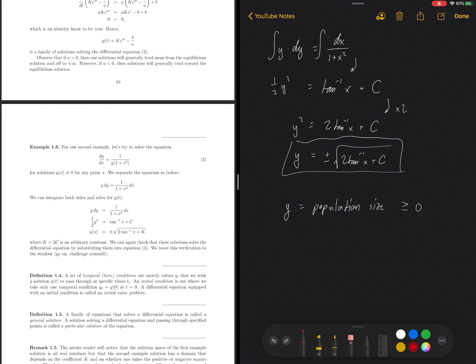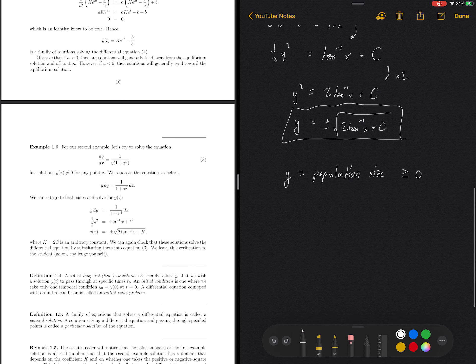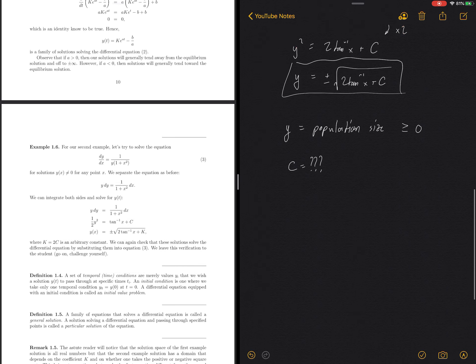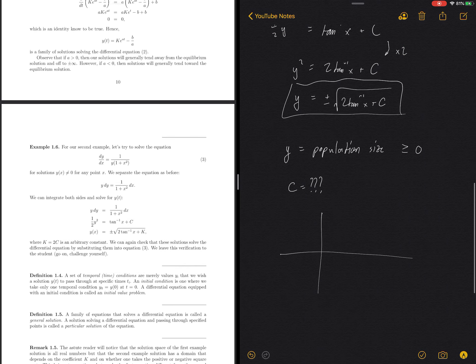So in this case, let's make sure that we have a positive population size and that would make, that would force us to use this positive branch. Awesome. So we know what we need to do, but there's also another issue about which constant should we use? C equals what now? Well, that's going to really depend on which value you want your function to pass through.